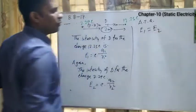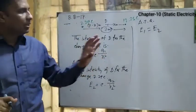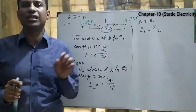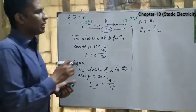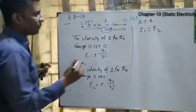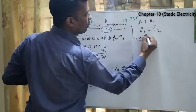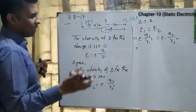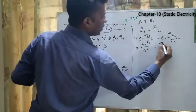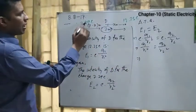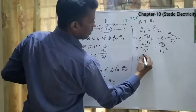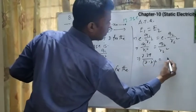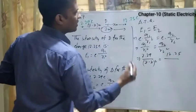Since the stem states the electric field intensity at D is zero, the two intensities must be equal: E1 = E2. Substituting values: k × 7.29 / (7 − X)² = k × 12.25 / X². The k cancels, giving 7.29 / (7 − X)² = 12.25 / X².